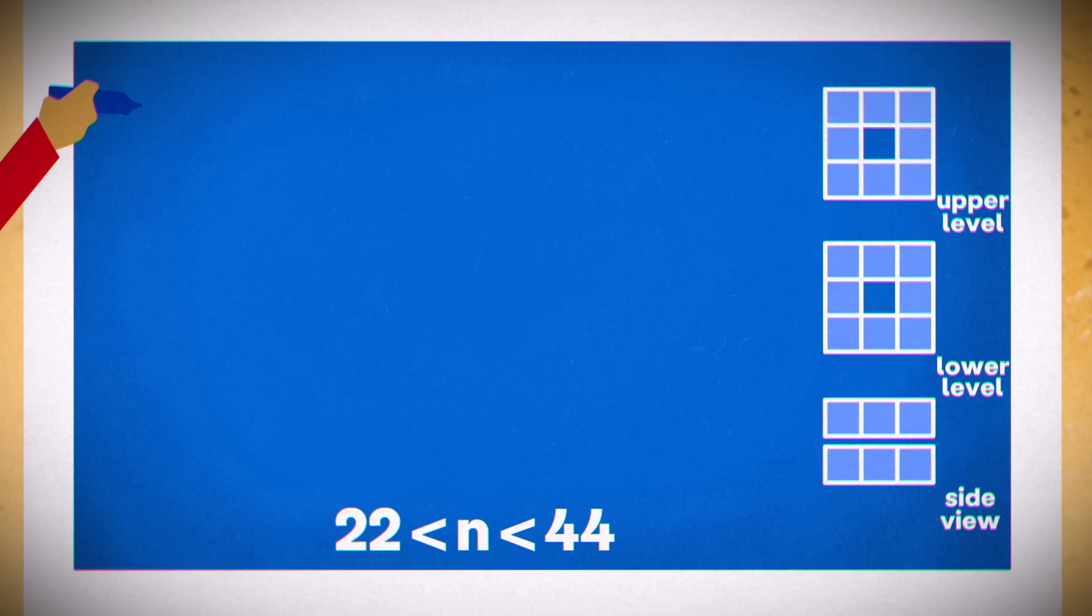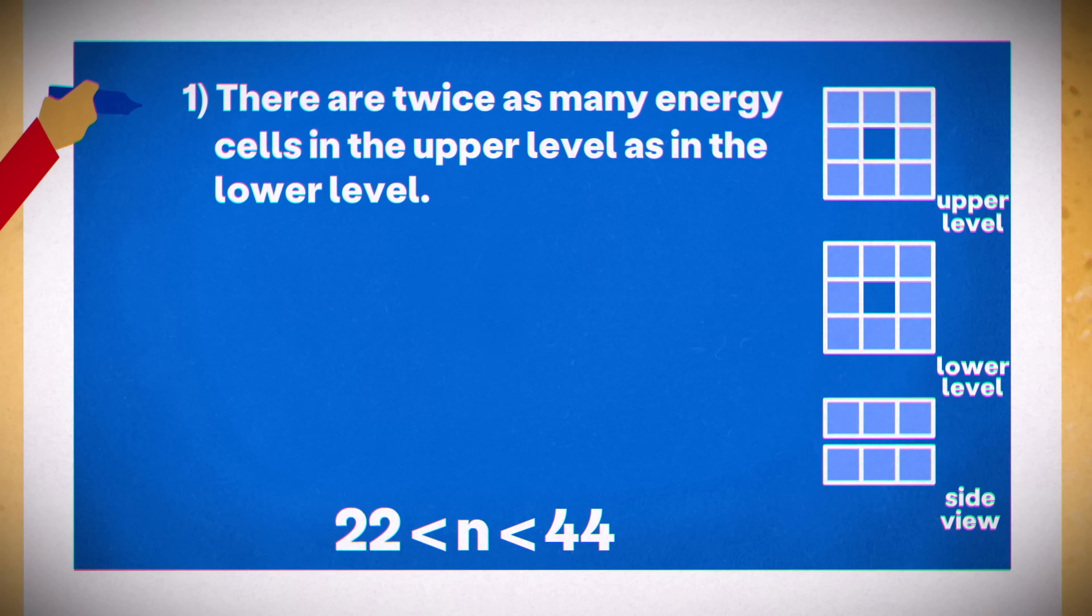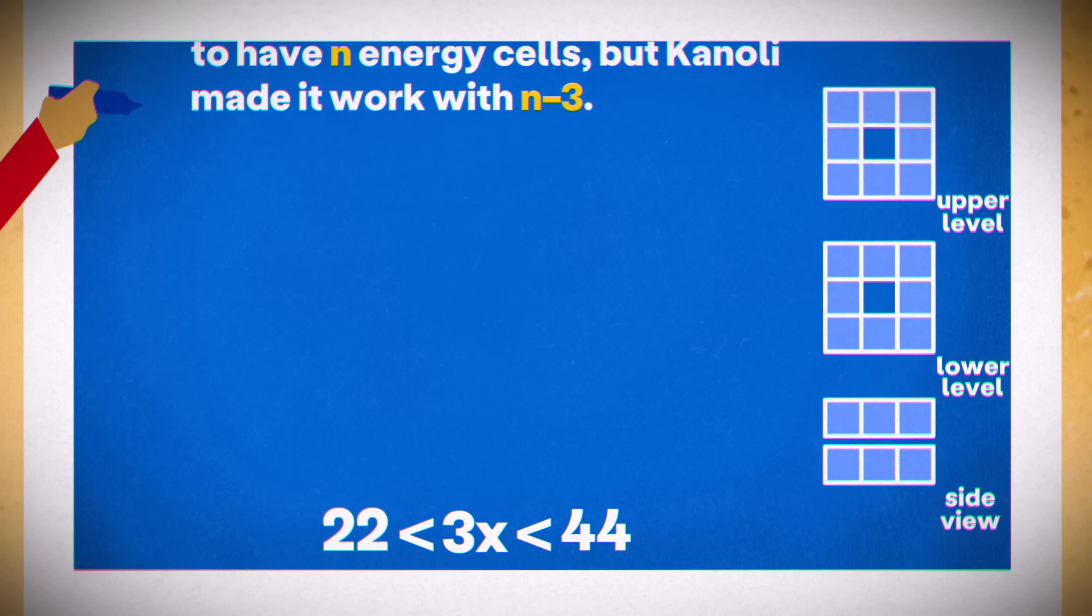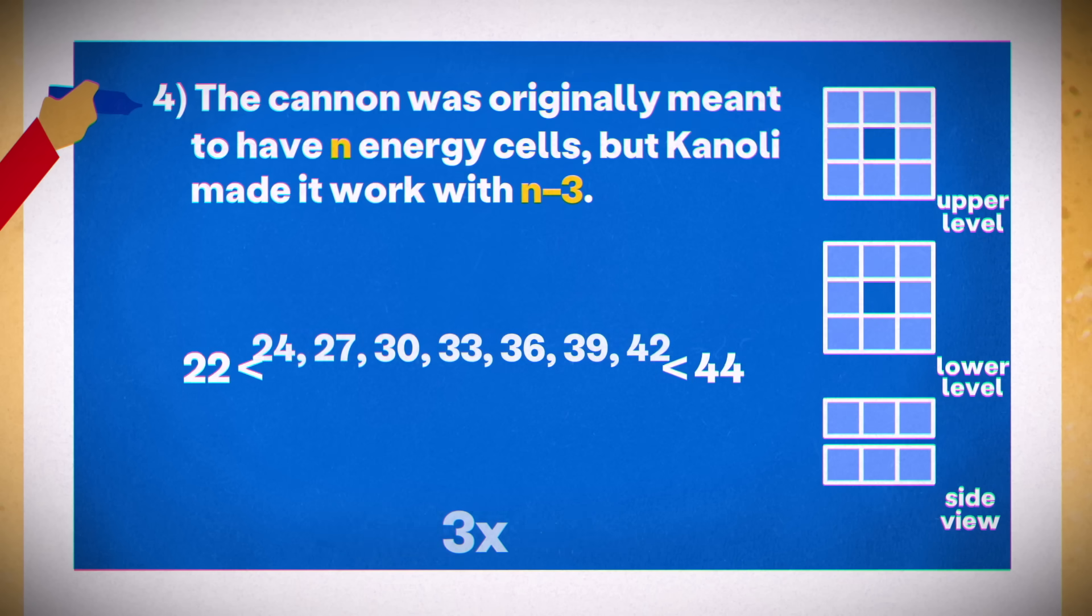We can use the other rules to refine our options further. Since there are twice as many cells in the upper level, the total cells must be a multiple of three. Now, because of rule four, we need to find two consecutive multiples of three that can meet all the conditions.